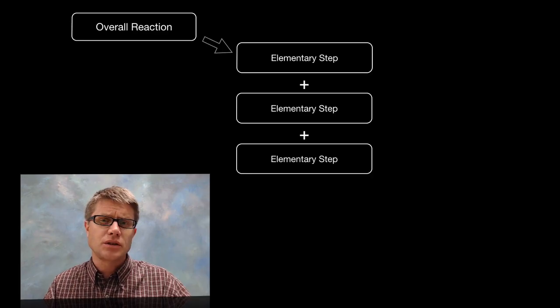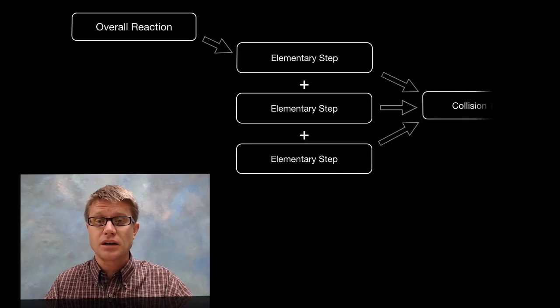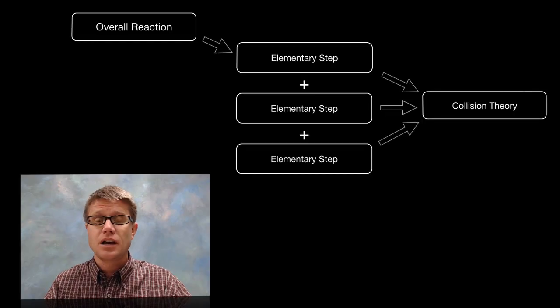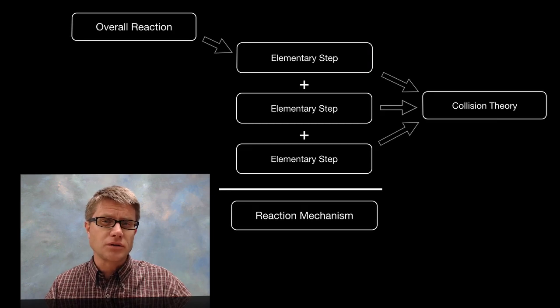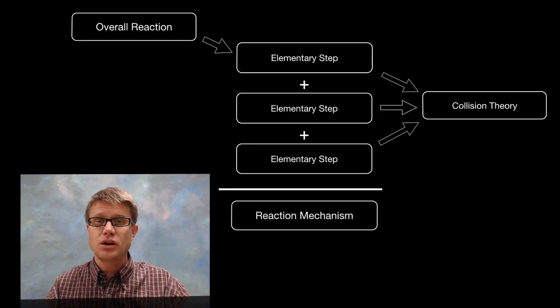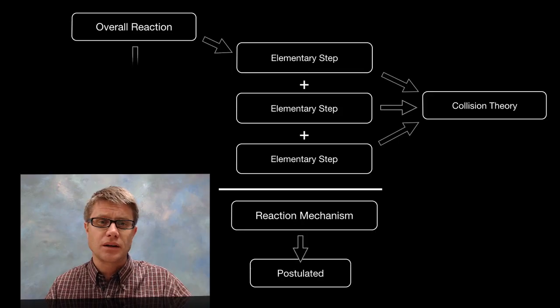Now each of those elementary steps are based on the collisions between particles. And so that collision theory is going to tell us a lot about the speed at which that reaction is occurring. And so adding all those up we get what's called the reaction mechanism, or the overall steps of the reaction. And this can only be postulated.